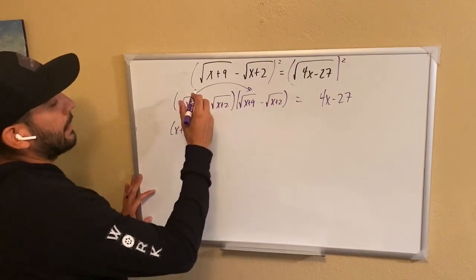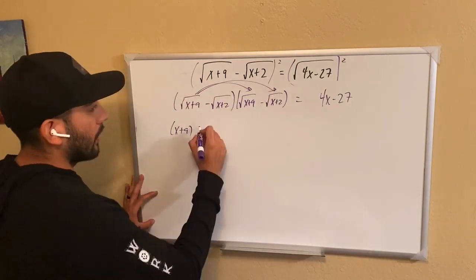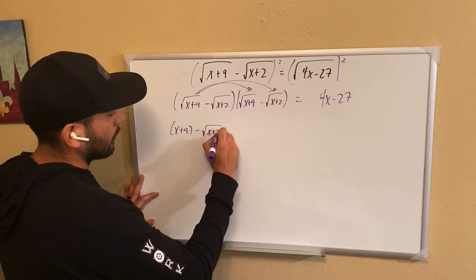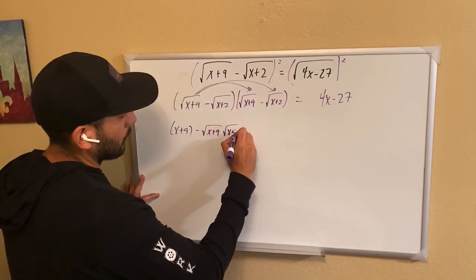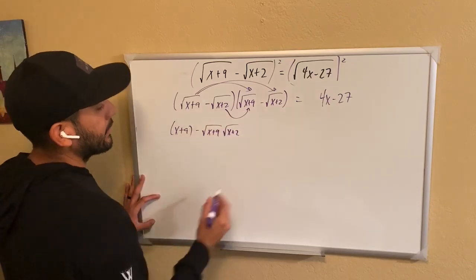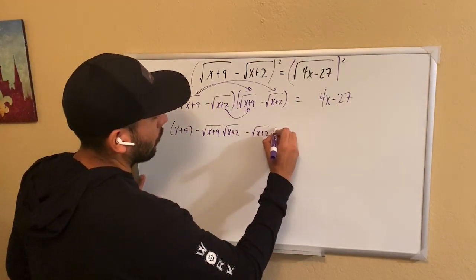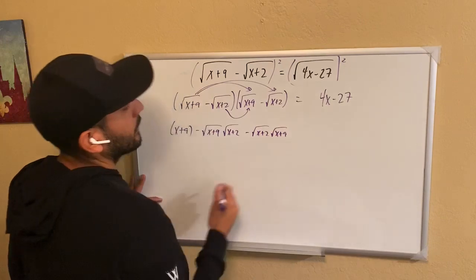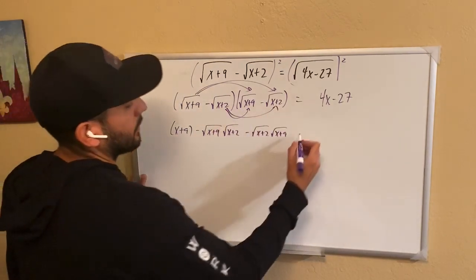Then we have the outside, which becomes root x plus 9 times root x plus 2, inside minus root x plus 2 times root x plus 9.